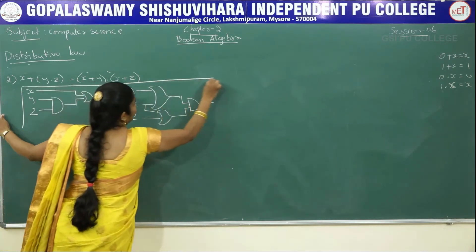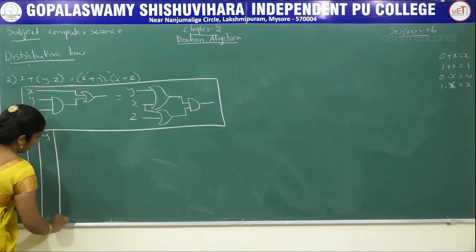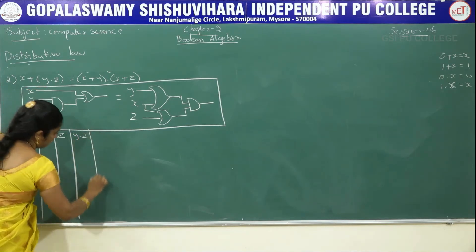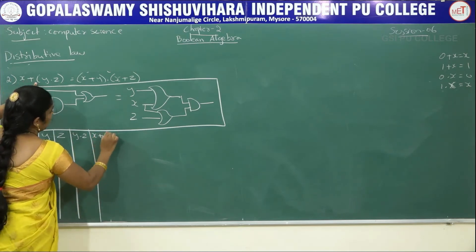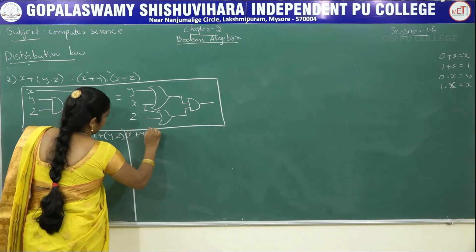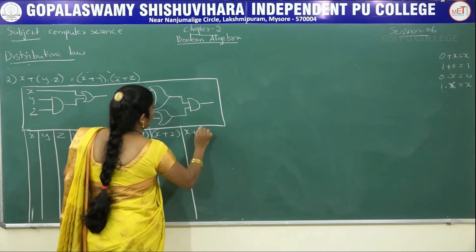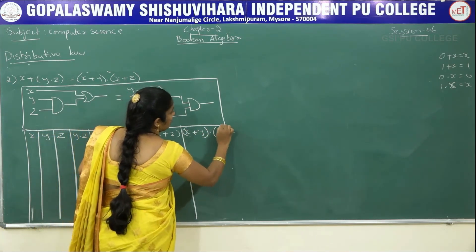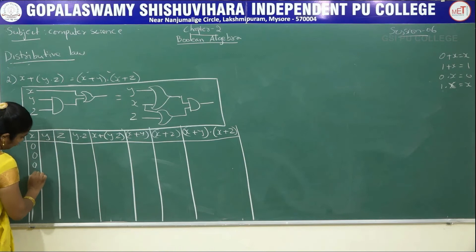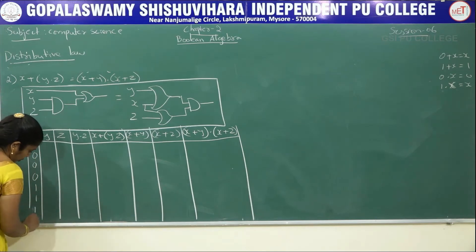Now we write the truth table for the second law using the same pattern. Variables x, y, and z. We will find y·z, then x+(y·z), then x+y, then x+z, and finally (x+y)·(x+z). Fill in: four zeros then four ones for x, alternating two zeros two ones for y, alternating 0,1 for z.